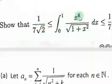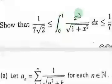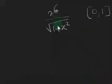The bounds are 1/7 and 1 over 7√2. When you integrate the numerator x⁶, you get x⁷/7. So you have 7 in both places. With that in mind, if you find the max and min value for the denominator, you can prove this property very easily. Integrating x⁶ gives x⁷/7.